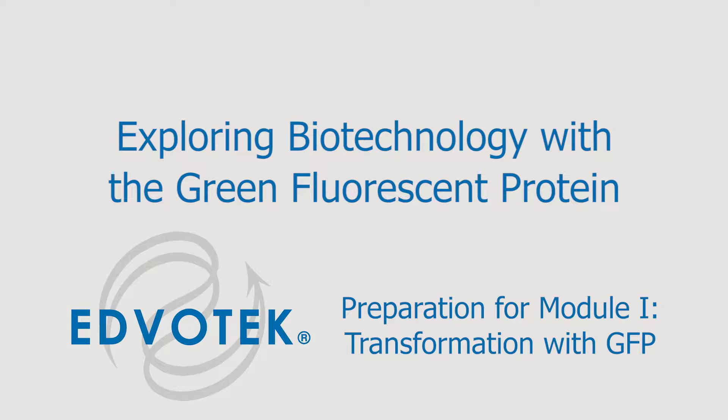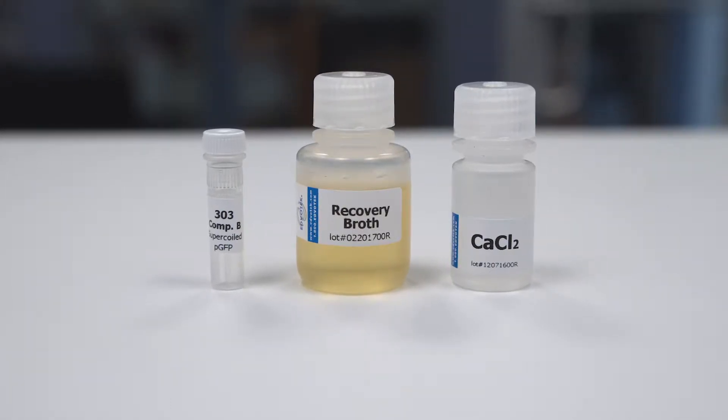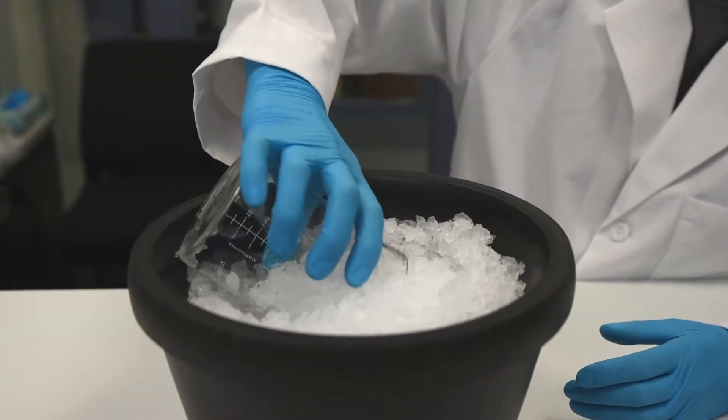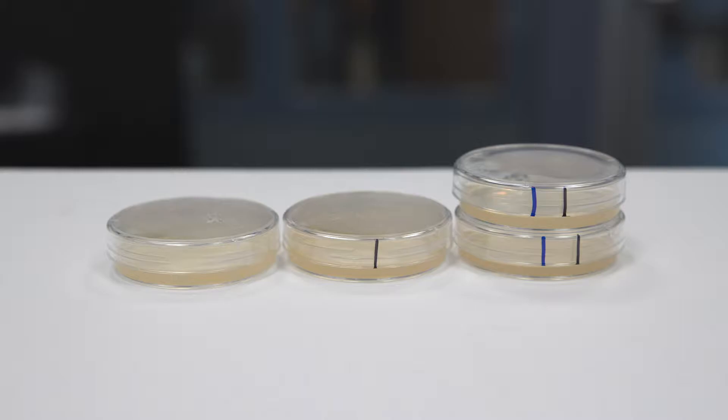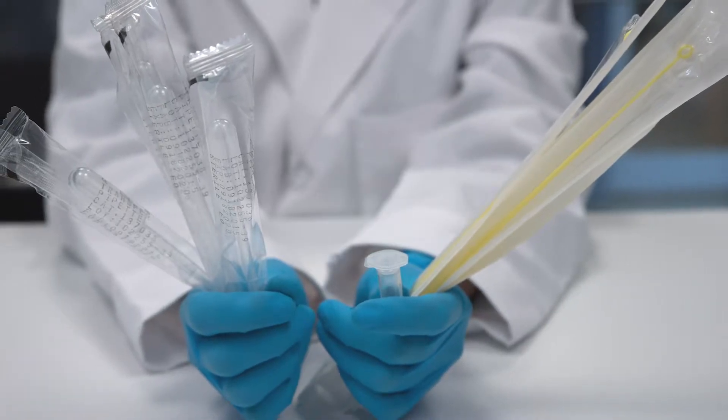For this prep you will need supercoiled pGFP plasmid, recovery broth, and calcium chloride. Each group will need crushed ice or an ice water bath, LB agar plates, sterile 1 ml pipettes, inoculating loops, and one microcentrifuge tube.